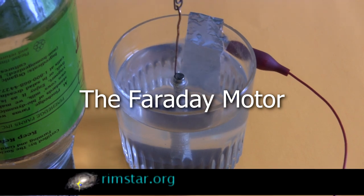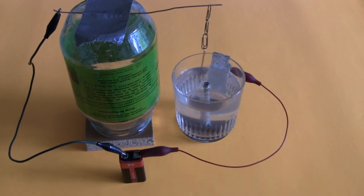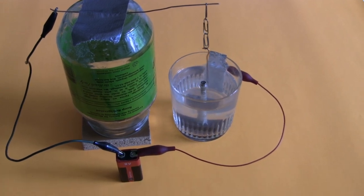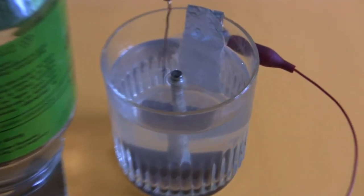Hi gang. This is the Faraday motor. It's a fun simple experiment you can do using household parts. It was the very first electric motor ever made and was demonstrated by Michael Faraday in 1821. I'll show you how to build it and then explain how it works.